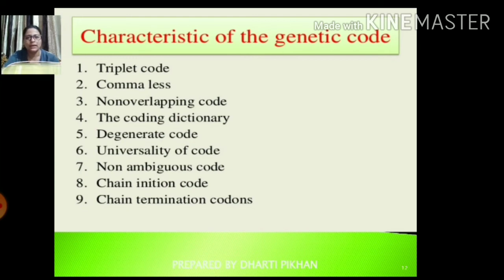Further characteristics include: it is a proper dictionary code; it is a degenerate code — meaning more than one codon can code for the same amino acid; universality of the code — the same genetic code applies whether in bacteria, humans, or any other organism, coding for the same amino acids.